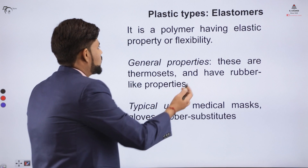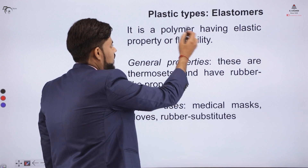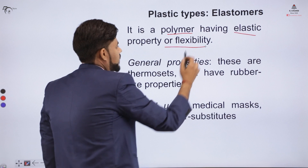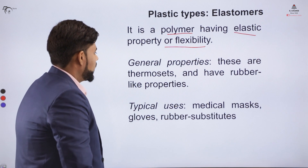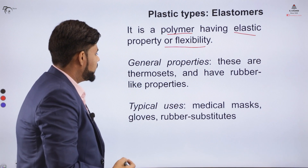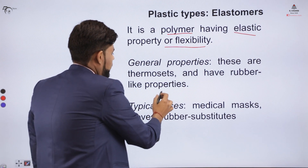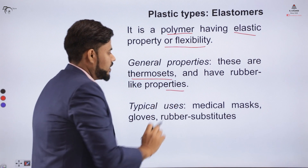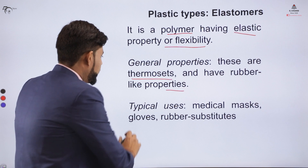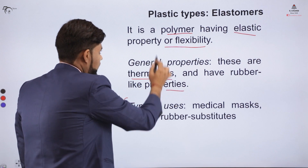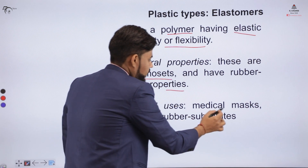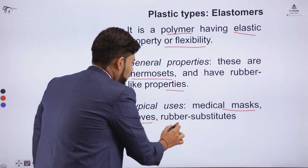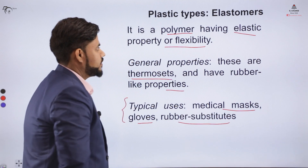The next category is elastomers. Elastomers are polymers that have elastic properties or flexibility, and they generally have rubber-like properties — they are thermosets with rubber-like properties. Typical uses of elastomers include medical masks, gloves, or rubber substitutes.